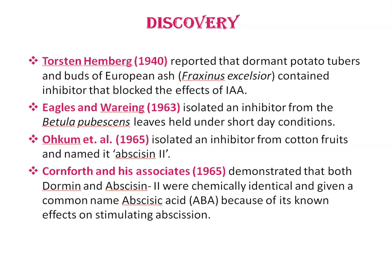In 1963, Eagle and Bearing isolated an inhibitor from Betula pubescens leaves held under short-day conditions. When this substance was reapplied to leaves of Betula pubescens seedlings, apical growth was completely arrested as this substance induced dormancy, and they named it Dormin. In 1965, Ockham et al. isolated an inhibitor from cotton fruits and named it Abscisin-2. Cornforth and his associates in 1965 demonstrated that both Dormin and Abscisin-2 were chemically identical and gave the common name Abscisic Acid, ABA, because of its known effects on stimulating abscission.